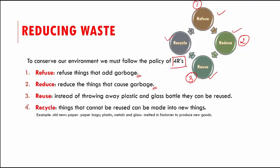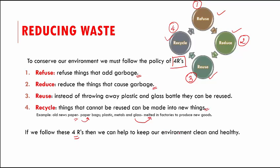The last and most important R is Recycle. Things that cannot be reused at all can be made into something totally new. Old newspapers can be made into paper bags, and plastic, metal, and glass are generally melted in factories to make new goods. Waste collectors come around to collect old paper, plastic, and glass from households and take them to places where new things are made from old wastes. If we follow these four golden R's, we can help keep our environment clean and healthy.